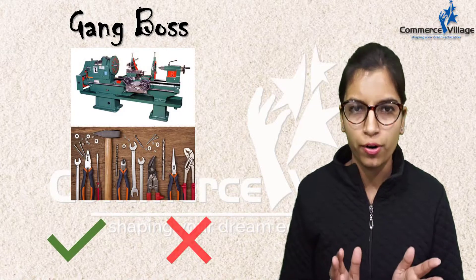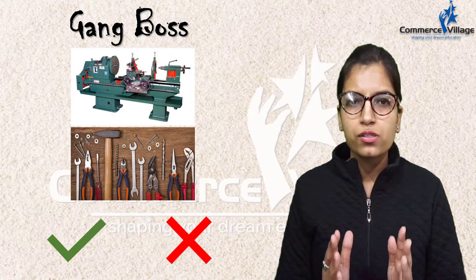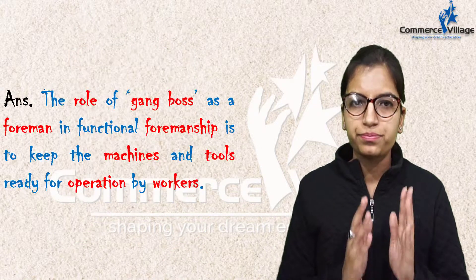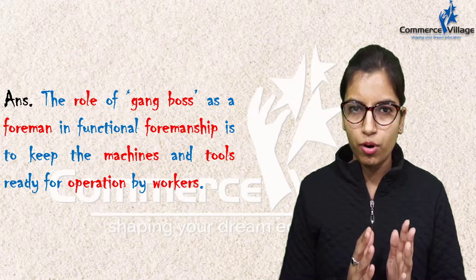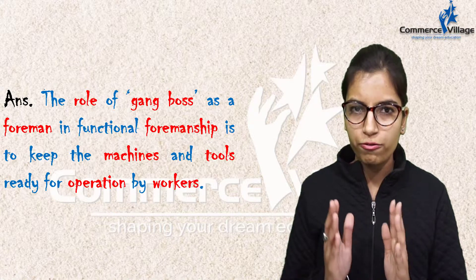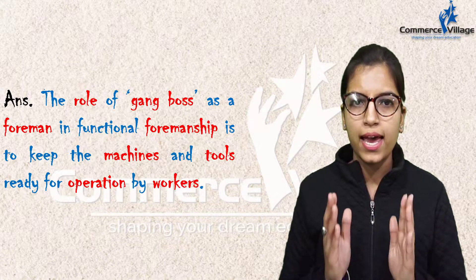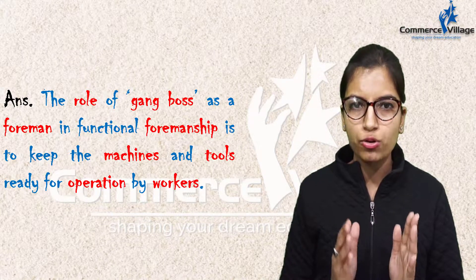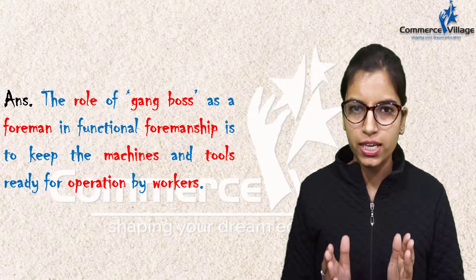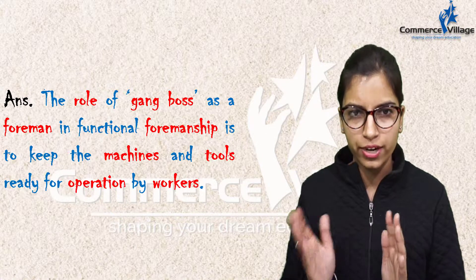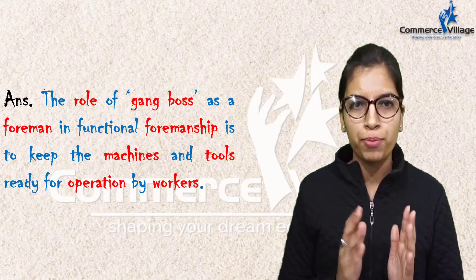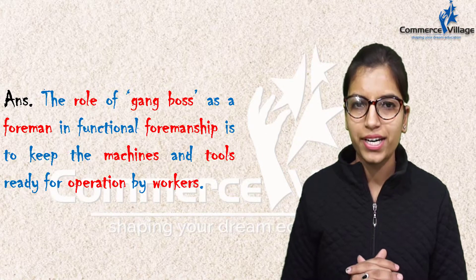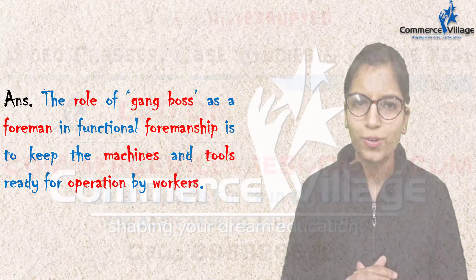So how we will write it in the exam: the role of gang boss as a foreman in functional foremanship is to keep the machines and tools ready for operation by workers. Thank you.